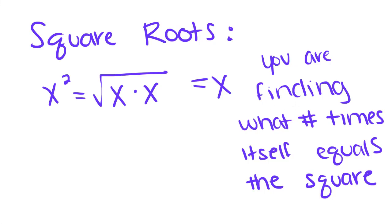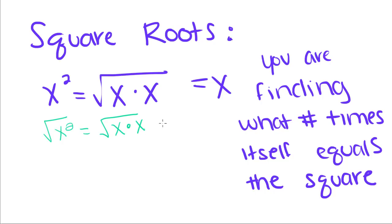You're finding what number times itself equals the square. So for x squared, we know if we took the square root of x squared — since we know that it's x times x — when we take the square root of it, we just have x. A square root is how you undo a squared function.